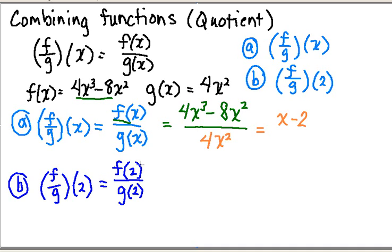So the first way I can calculate this is go back to my original f function, wherever I have an x, I'm going to plug in 2. So I get 4 times 2 cubed, or 8, minus 8 times 2 squared, or 4. So I get 32 minus 32 is going to give me 0. That's what f of 2 is.